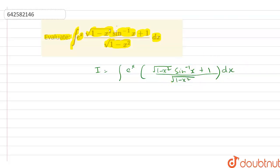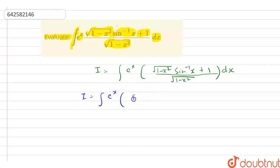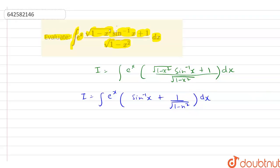So here, let's say that our I is equal to integration of e raised to power x into sine inverse x plus 1 by under root of 1 minus x squared, dx.